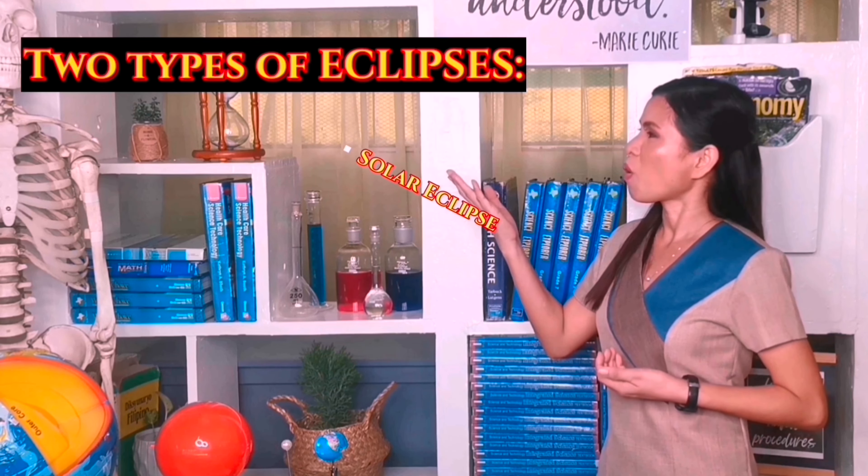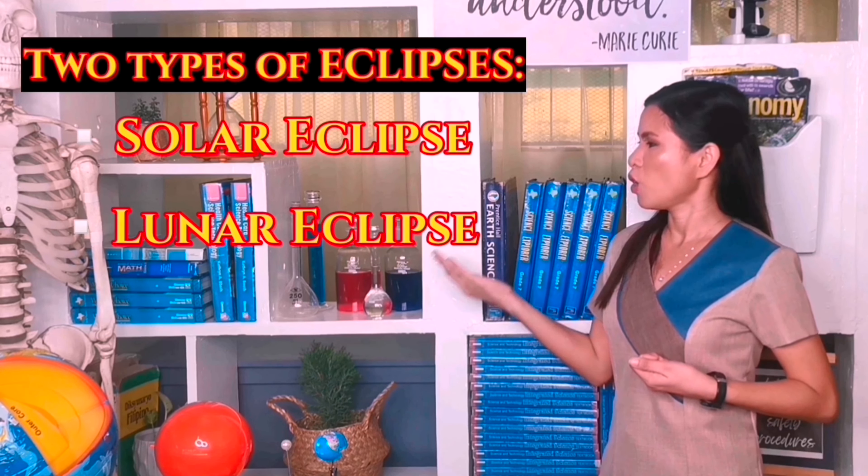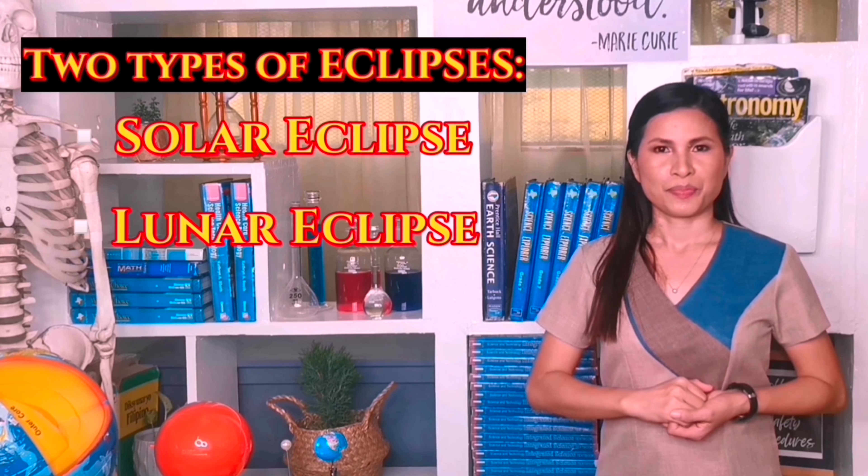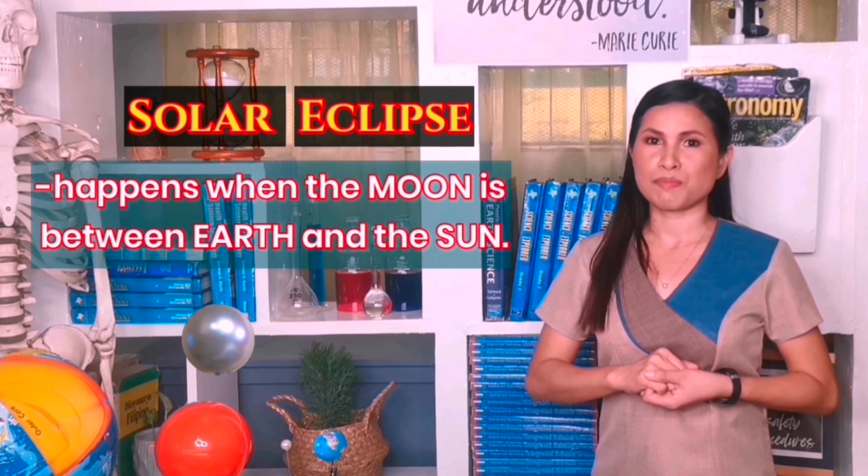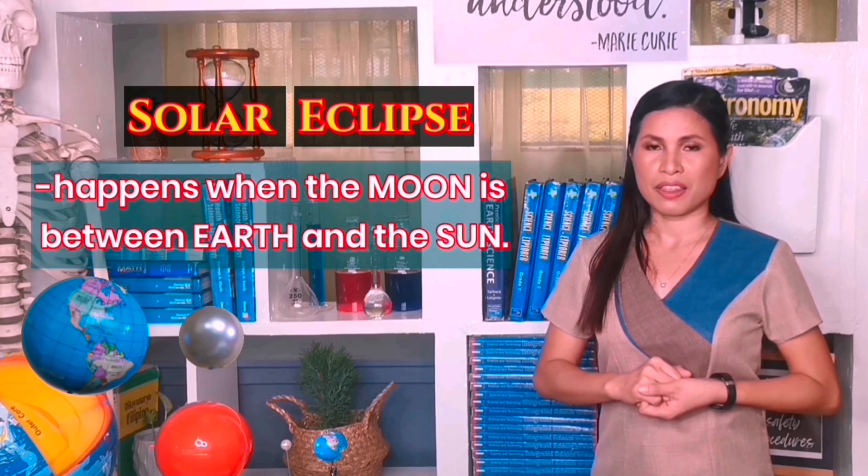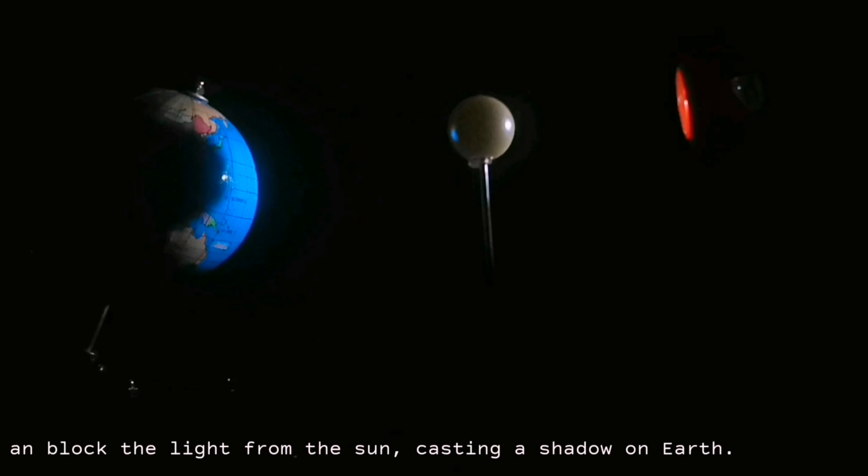From Earth, we see two types of eclipses: eclipses of the sun or solar eclipse, and eclipses of the moon or lunar eclipse. A solar eclipse happens when the moon is between the Earth and the sun.